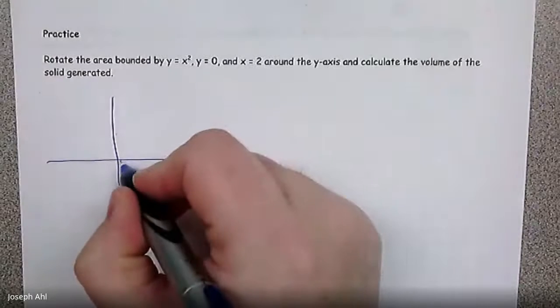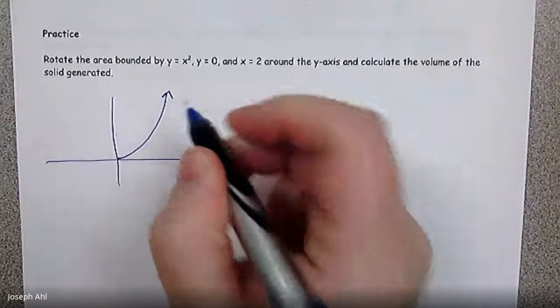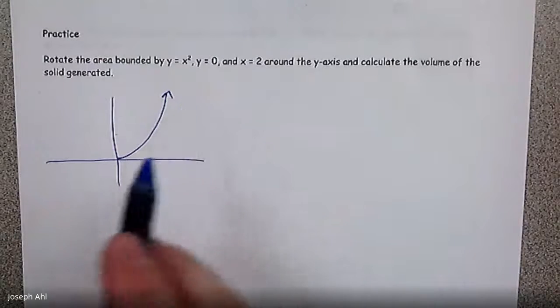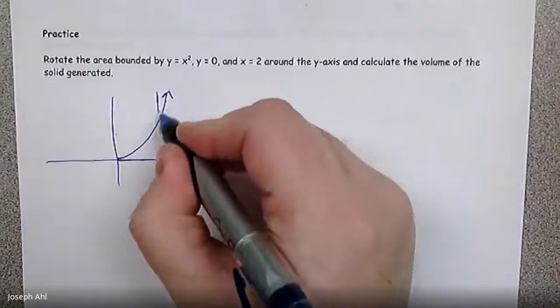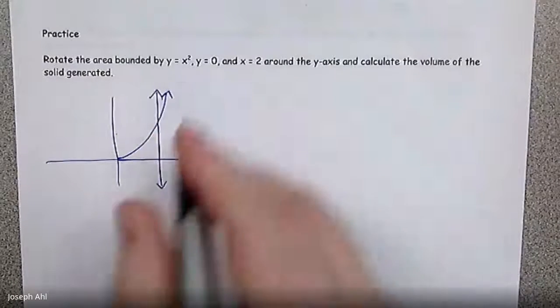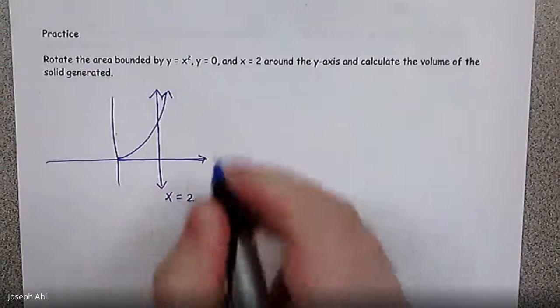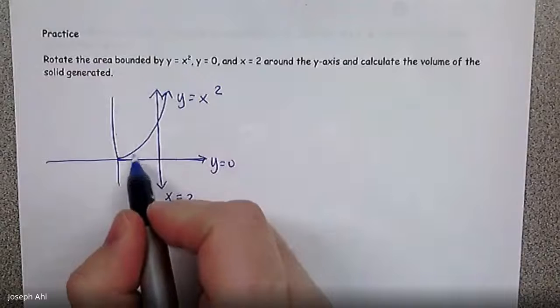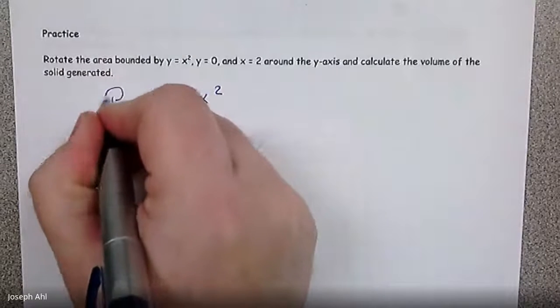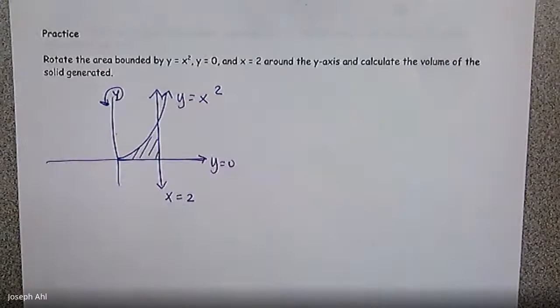So we got y equals x squared. I'm only going to draw it in the first quadrant for now because we're going to bound this by y equals zero. I have the x axis and the line x equals two. So here are our three curves, and we're going to take this region, rotate it around the y axis, and then think about what is the resulting solid going to look like here.